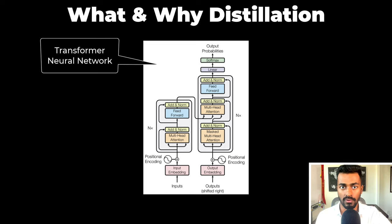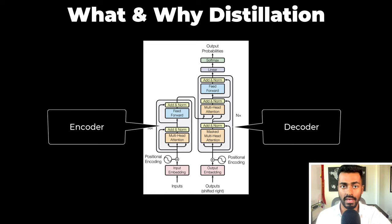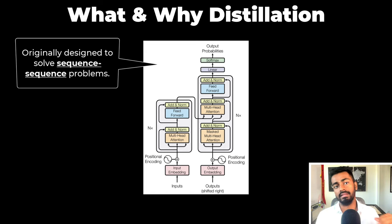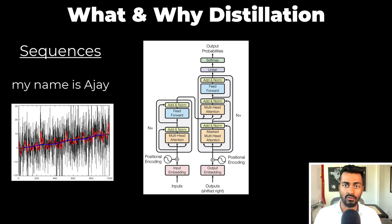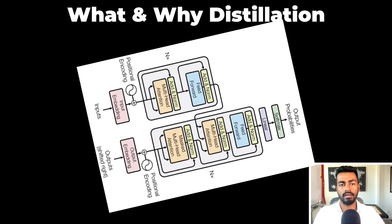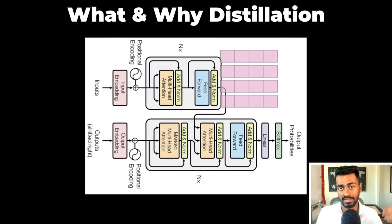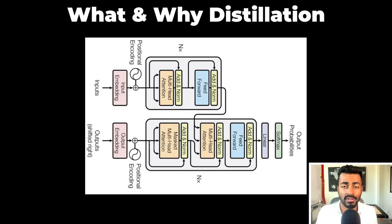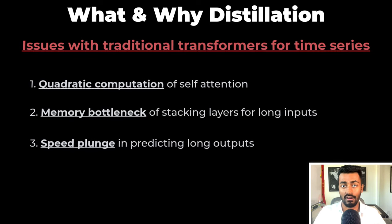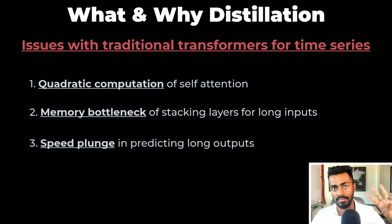This is the transformer neural network. It has an encoder and a decoder, and this was originally designed to solve sequence-to-sequence problems. Sequence is data with a defined ordering like words in a sentence or time series data. Originally it was implemented with language translation in mind, where the sequence length is small to moderate and this architecture works pretty well. But when the sequences get very long, as we do see in some time series data problems, this architecture has three main issues.